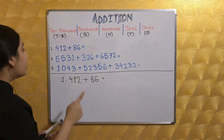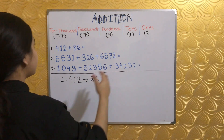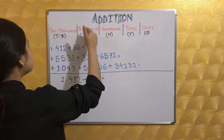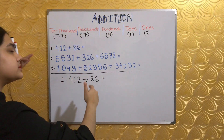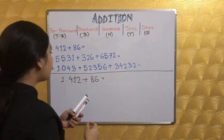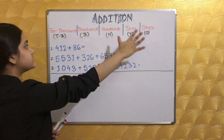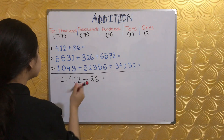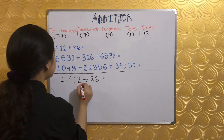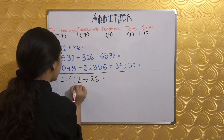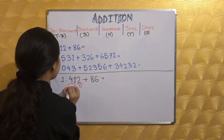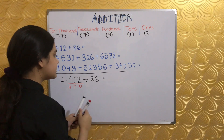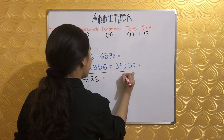Over here I've written the place values: ones, tens, hundreds, thousands, ten thousands, hundred thousands, and so on. For 412, two is in the ones place, one is in the tens place, and four is in the hundreds place.